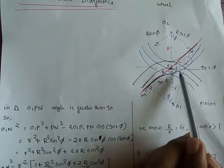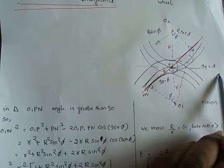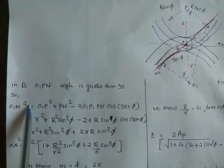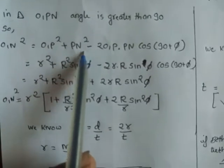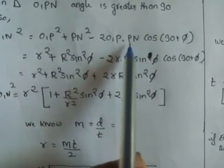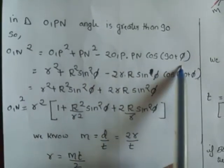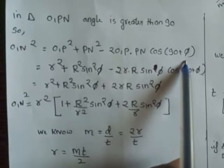This is a triangle which is having an angle more than 90 degrees. This angle is 90. So by the property of triangle, O1N square equals to O1P square plus PN square minus 2 O1P into PN cos of 90 plus phi. This is the same formula as studied in mechanics.